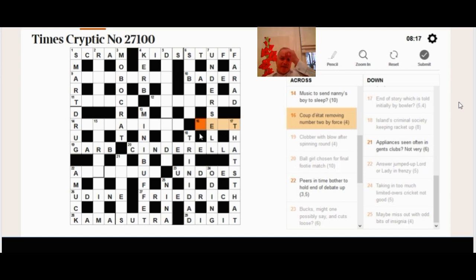16 across, coup d'etat removing number two by force. Well, they have to break up coup d'etat. The definition is coup. And you need d'etat removing... Oh in fact, de I think is a link word suggesting that this coup is made up of etat removing its number two. So E-A-T, because the second letter comes out. Force is the letter F. And so the coup is a feat.